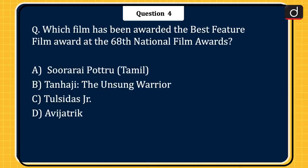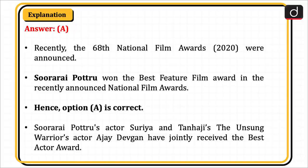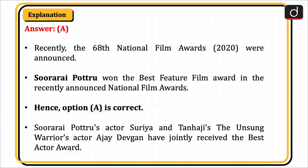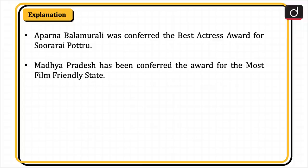Next question: which film has been awarded the Best Feature Film award at the 68th National Film Awards? Surarai Potru (Tamil), Tanhaji: The Unsung Warrior, Tulsidas Jr., or Ajivatrik? The correct answer is option A, Surarai Potru (Tamil). Recently, the 68th National Film Awards 2020 were announced. Surarai Potru won the Best Feature Film award. Surarai Potru's actor Surya and Tanhaji's The Unsung Warrior's actor Ajay Devgan jointly received the Best Actor award. Aparna Bal Morali was conferred the Best Actress award for Surarai Potru. Madhya Pradesh was conferred the award for the most film-friendly state.